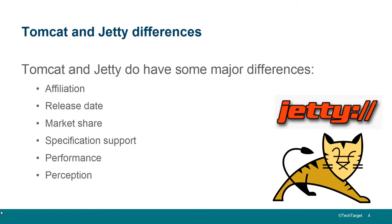Market share is also a big difference. In surveys, I see Tomcat having anywhere from about one third to 60% of the market, so the actual number is somewhere in between, but Tomcat is the most widely used Java application server. Jetty typically comes in around the 10% mark, so there are certainly more production implementations of Tomcat than Jetty.